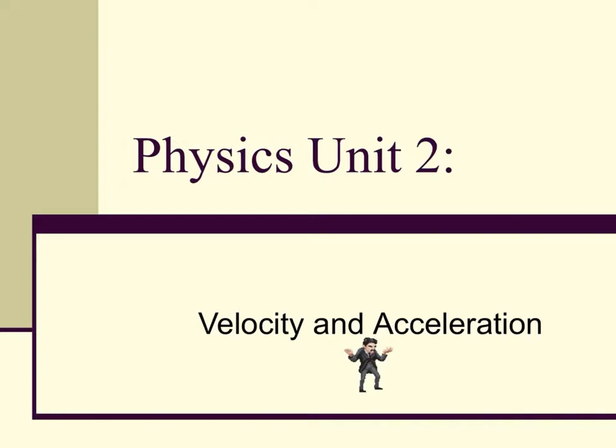Before we move on, let's clarify the difference between speed, velocity, and acceleration. Speed is the rate of motion or the rate of change in position, and it's expressed as distance per unit of time — distance divided by time. It is a scalar quantity with dimensions of distance and time, and we're going to look at speed on a separate video.